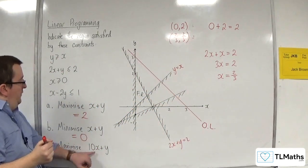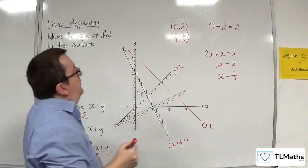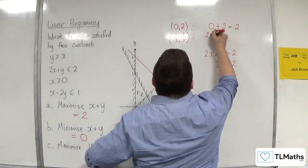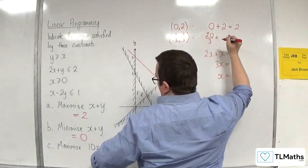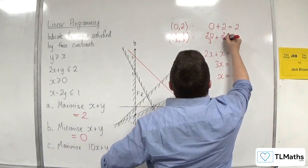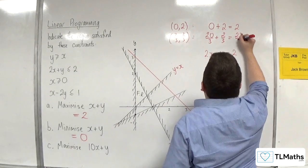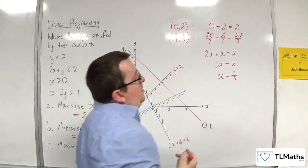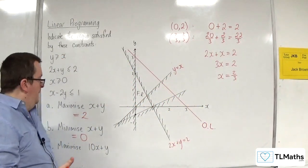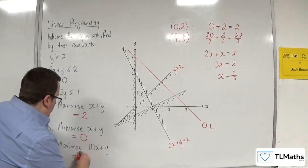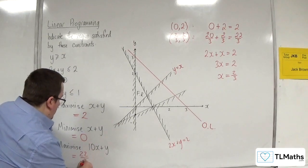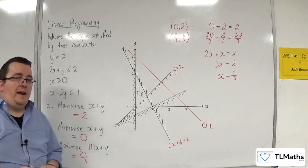So, I've got 10 lots of 2 thirds, so that would be 20 thirds, plus Y, which is 2 thirds. So, we get 22 thirds. And that's clearly bigger than 2. So, 22 thirds is the maximum value of 10X plus Y.